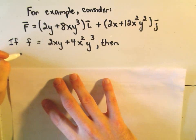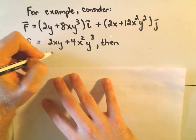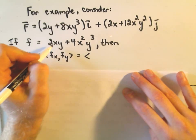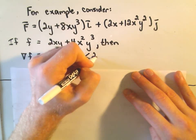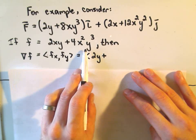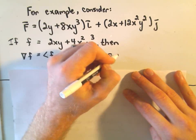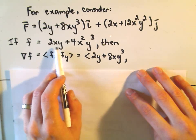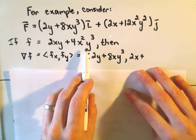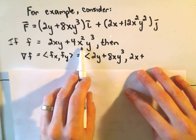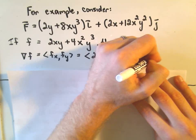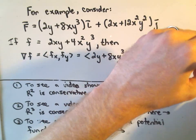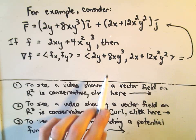Let's make a couple observations. Notice if we take the gradient of this function — that's the partial with respect to x and the partial with respect to y. If we take the partial with respect to x of 2xy we get 2y, and the partial of 4x squared y cubed with respect to x gives us 8xy cubed. Likewise, the partial with respect to y gives 2x, and treating x's as constants, the 3 comes out to give 12x squared y squared.